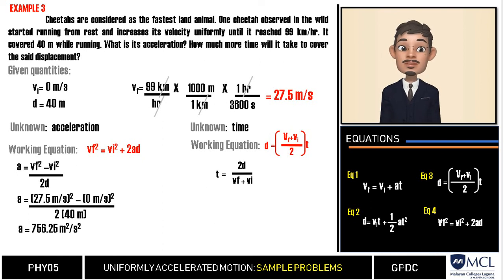Next, in the denominator, 2 multiplied by 40 meters is 80 meters. Then we divide these two numbers and we will get 9.45. Then we cancel the unit meter in the denominator and leave meter in the numerator because meter squared divided by meter is meter, and just copy the second squared. So our answer will be 9.45 meters per second squared.